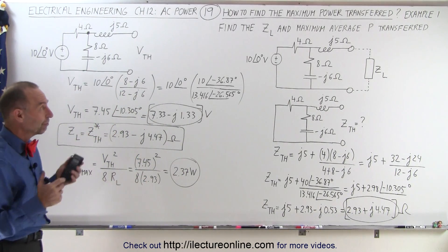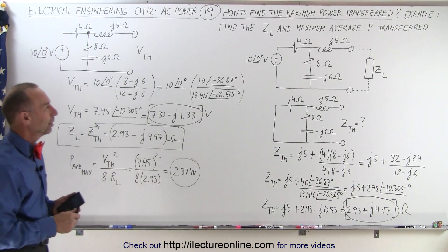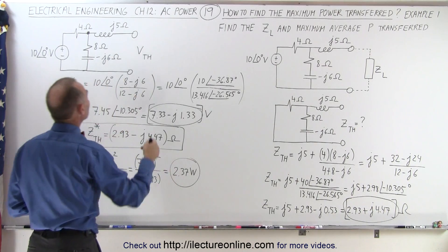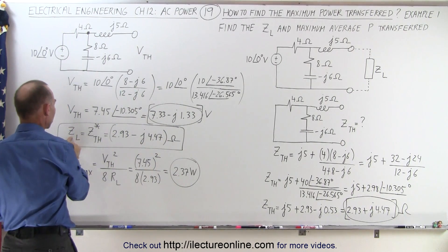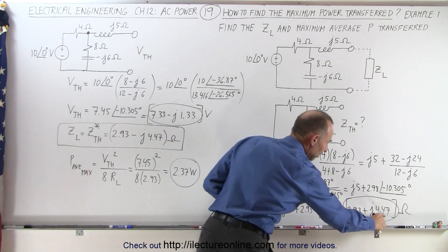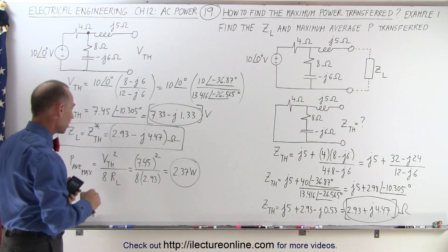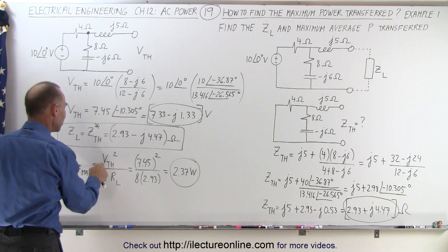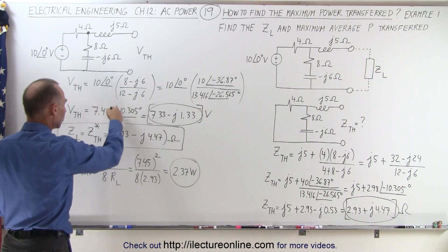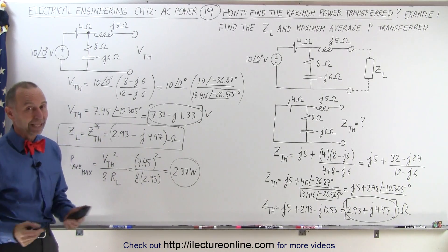To find the maximum average power transferred and the required load impedance, we first find the Thévenin impedance of the circuit, then find the Thévenin voltage. We then recognize that the load impedance must be the complex conjugate of the Thévenin impedance — changing the sign of the imaginary part gives the required load impedance. Finally, the maximum power equation is the Thévenin voltage magnitude squared divided by 8 times the load resistance, and that gives us the power transferred.